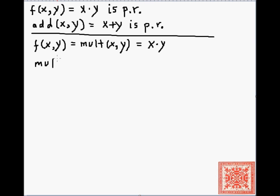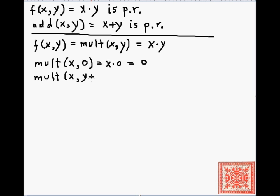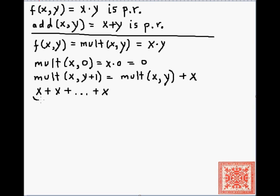We're going to write two recurrences. The base recurrence is: mult(x, 0) = x times 0 = 0. In the recursive case, mult(x, y+1) = mult(x, y) + x. The insight is that we are adding x to itself y times, so we use y as a counter. This means we'll be using the second definition of primitive recursion.